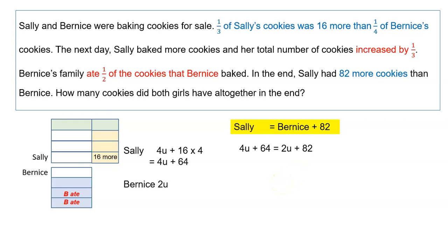Four units plus 64, which is what Sally has, equals what Bernice has: two units plus 82. We put the units together on the left-hand side and on the right-hand side is 82 minus 64. If two units equals 18, then one unit equals 9.